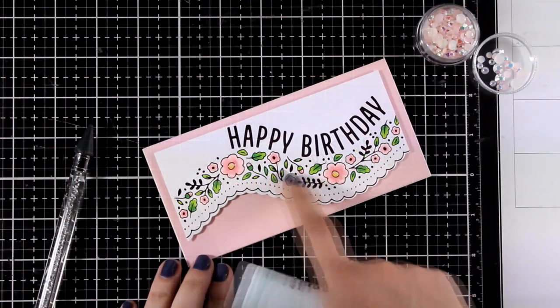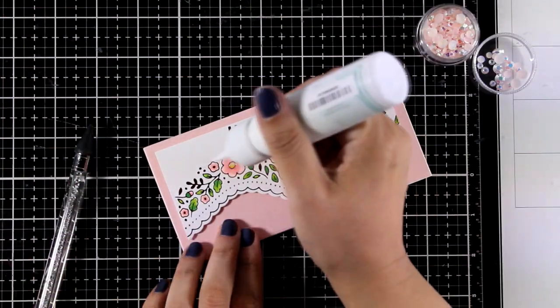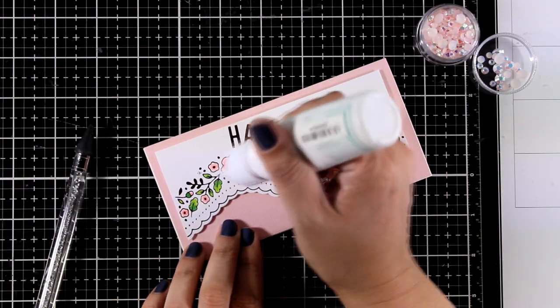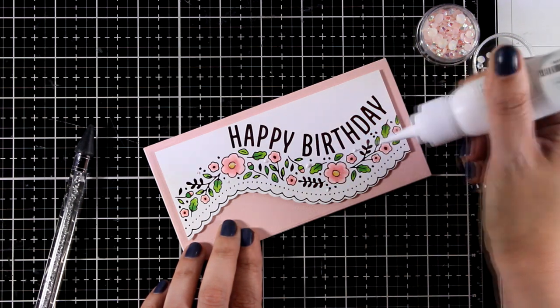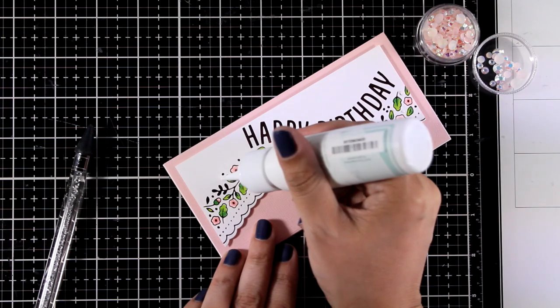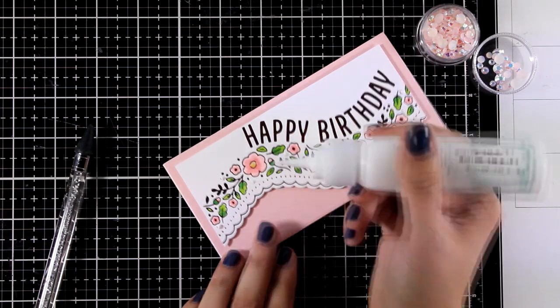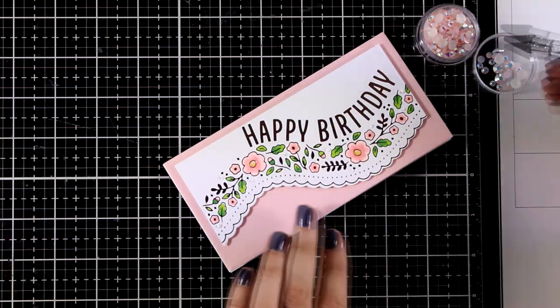However, I am going to embellish it with some pink gems here and there. If you notice the design has some dots, these are the dots that I am going to follow to add the little gems. Another way to go would be to cut out tiny little flowers and stick them on top for extra dimension.